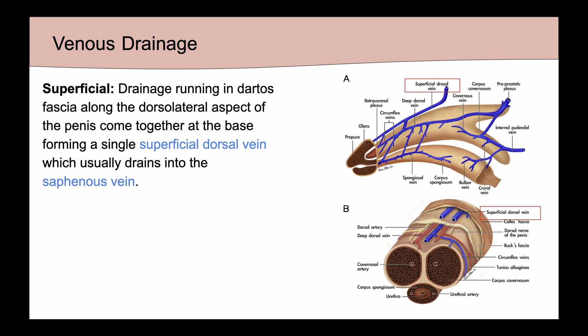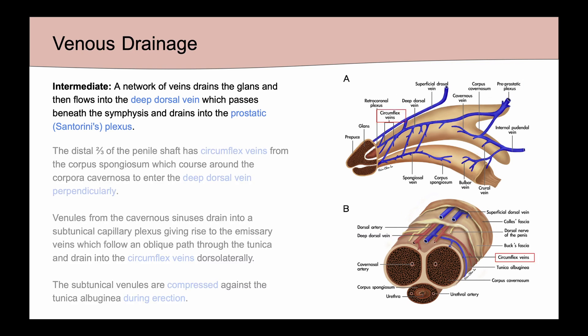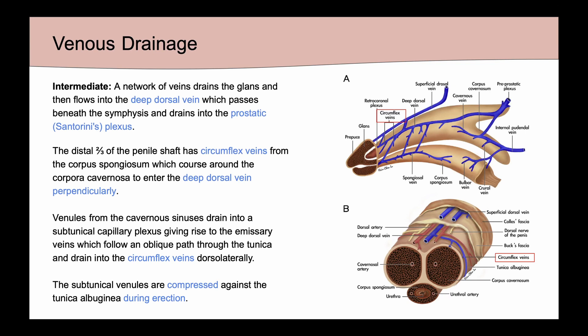We will think about venous drainage in three parts. For superficial drainage, the drainage runs through the dartos fascia and eventually converges at the base, forming a single superficial dorsal vein which usually drains into the saphenous vein. For intermediate venous drainage, the glans is drained by a network of veins that go into the deep dorsal vein, which then passes beneath the symphysis and drains into the prostatic or Santorini's plexus.